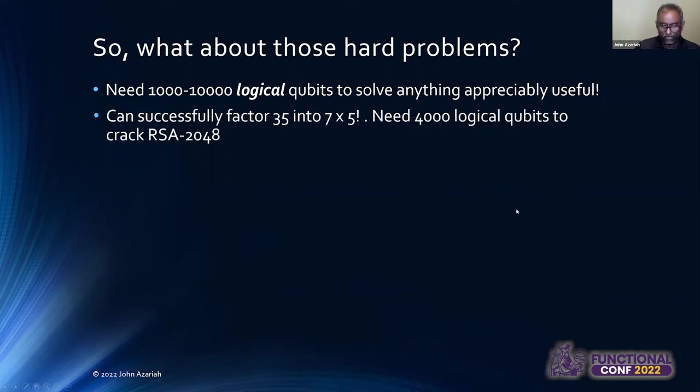We can successfully factor 35 into 7 and 5 on quantum hardware. And we occasionally get the right answers, as is common in statistical computing. But you need 4,000 logical qubits to crack 2048 at least. So we are some way from this, we can safely say, at this point.